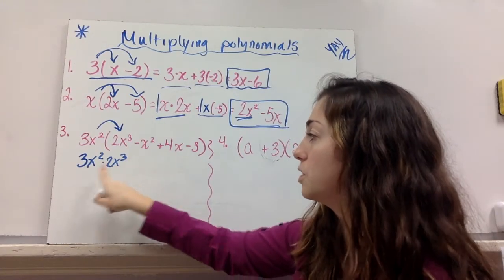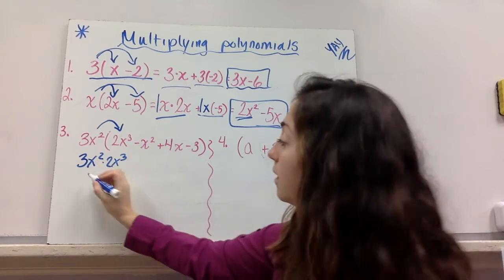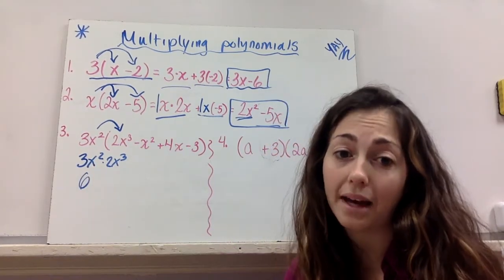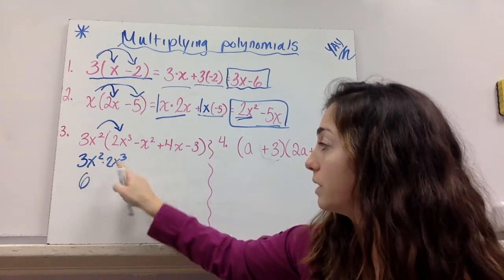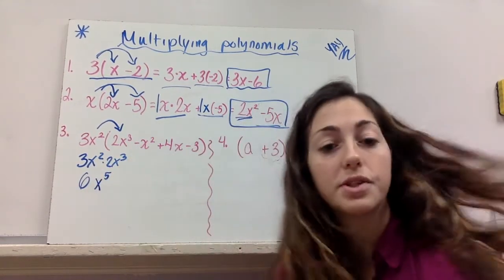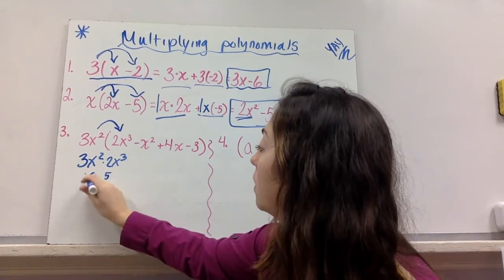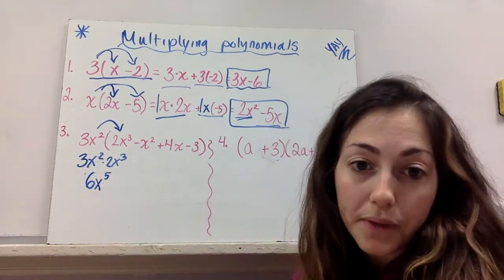So I have 3x squared times 2x cubed. I do 3 times 2. That's 6. And x squared times x cubed. I'm adding my exponents. 2 plus 3 is 5. So I have 6x to the fifth power. That should be all together because it's being multiplied. Alright, cool.